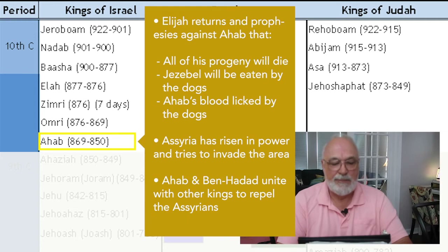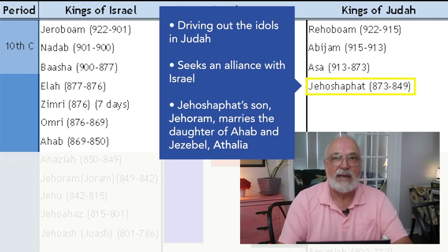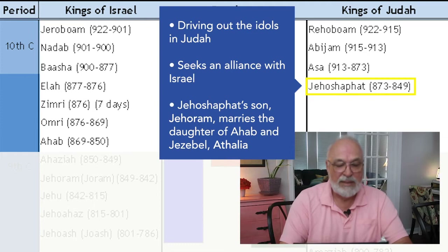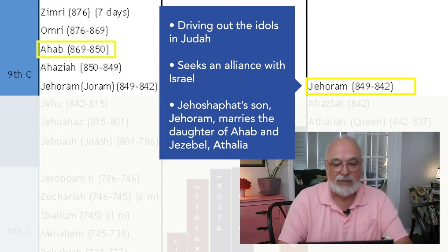Meanwhile, in the southern kingdom, Jehoshaphat is driving out all of the idols in Judah. Jehoshaphat, unlike the kings before him, wants to seek an alliance with Israel instead of being at war. His son Jehoram marries Athaliah, the daughter of Ahab and Jezebel.